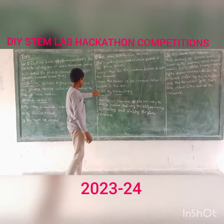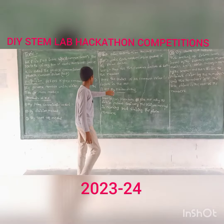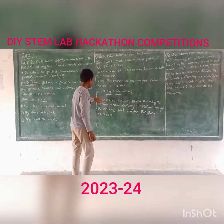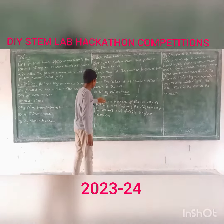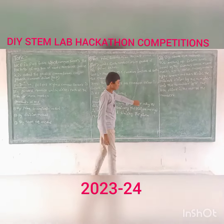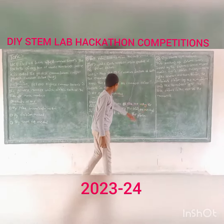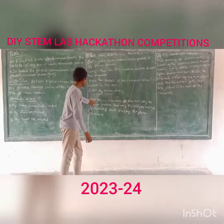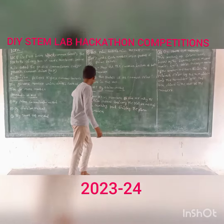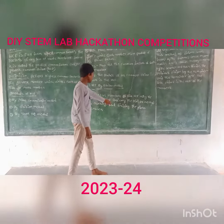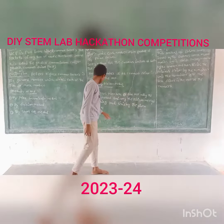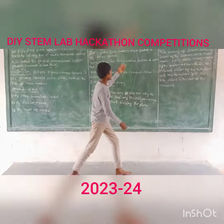The second method is HCF by division method. Now let us find the HCF using the division method. Basically, the division method is nothing but dividing the given numbers.